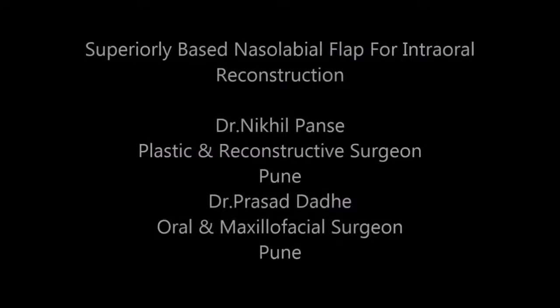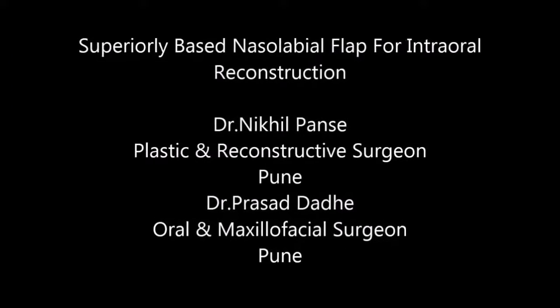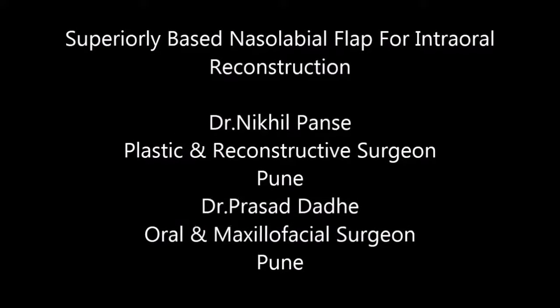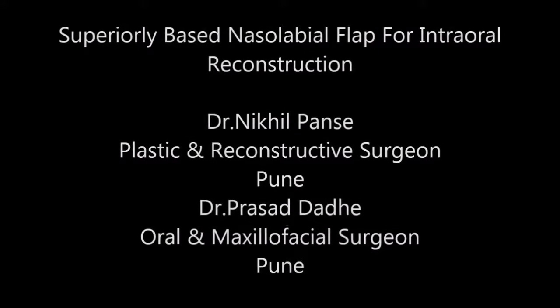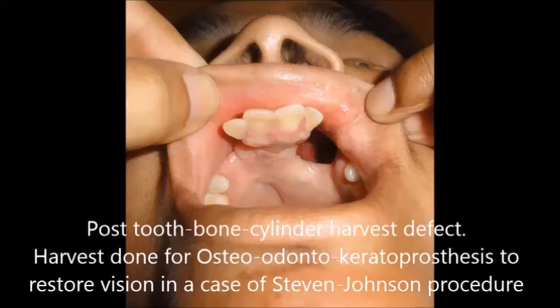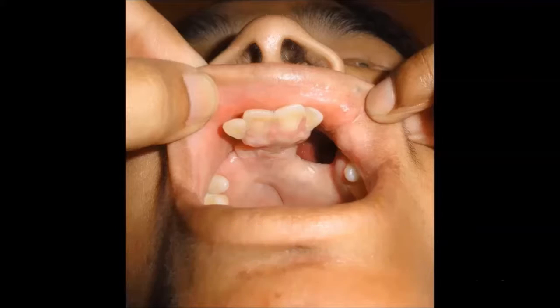This video demonstrates the use of a superiorly based nasolabial flap for intraoral reconstruction. This patient is a known case of Steven Johnson syndrome, presented with a defect in the left maxilla.